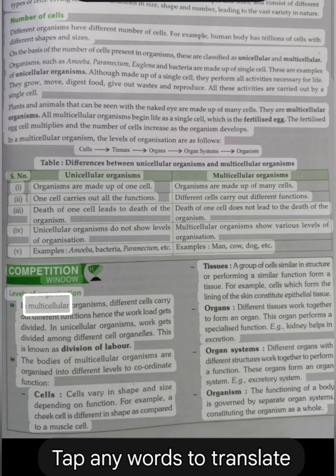Levels of organization. In multicellular organisms, different cells carry out different functions, hence the workload gets divided. In unicellular organisms, work gets divided among different cell organelles. This is known as division of labor. The bodies of multicellular organisms are organized into different levels to coordinate function. Cells: Cells vary in shape and size depending on function. For example, a cheek cell is different in shape as compared to a muscle cell.